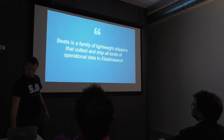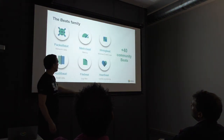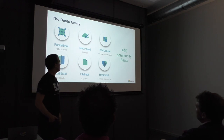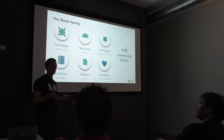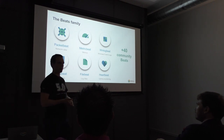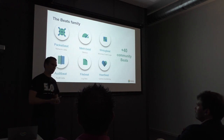The Beats family are our lightweight shippers. We have, so far, six of them: PacketBeat, MetricBeat, WinlogBeat, AuditBeat, FileBeat, HeartBeat. One point I forgot: we actually have more than 50 community beats — we can do everything. LibBeat itself, which is below all of this and is written in Go, is a framework. So if you have a data source you want to monitor that we don't support, you can write your own beat, deploy it on your machine, and fetch and ship data to Elasticsearch.